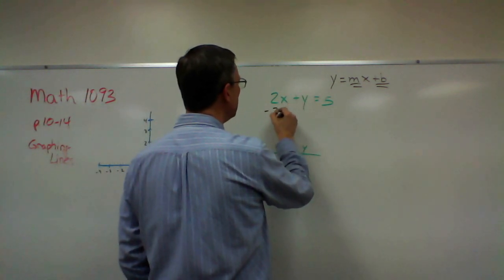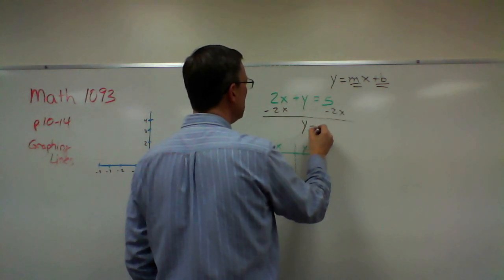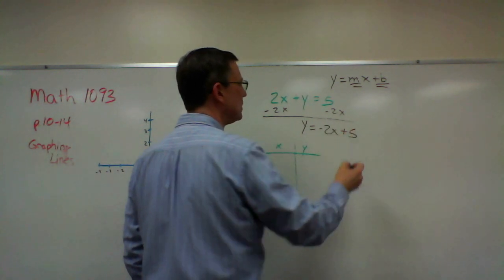The easy thing here to do would be to subtract 2x from both sides. So y equals negative 2x plus 5.